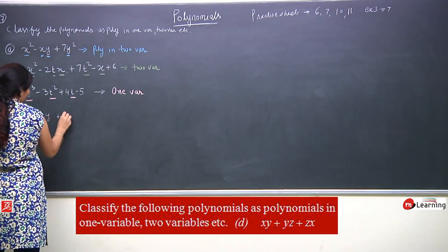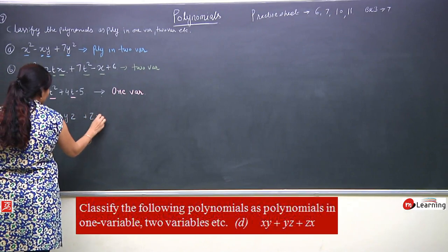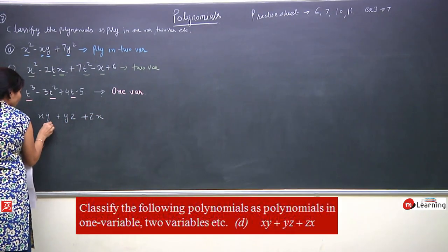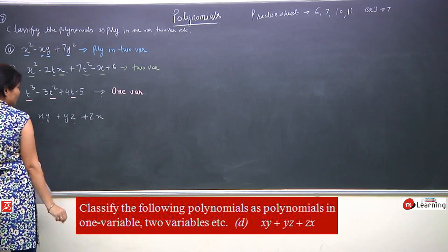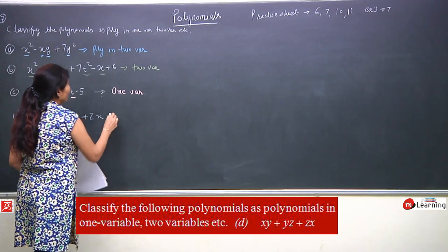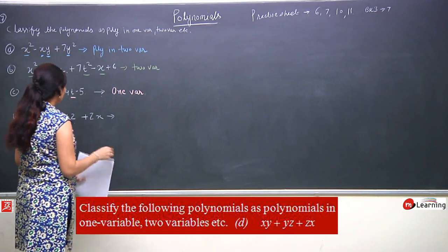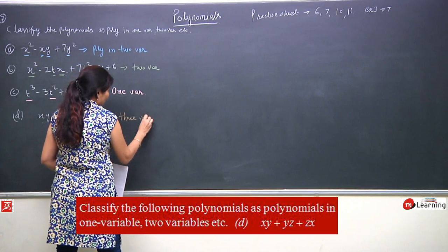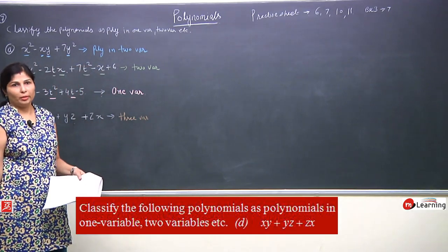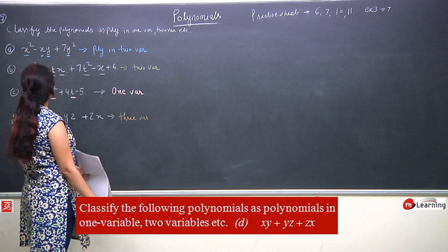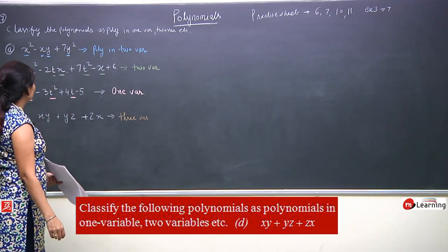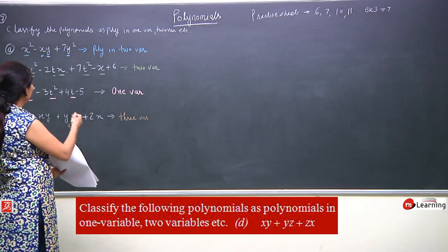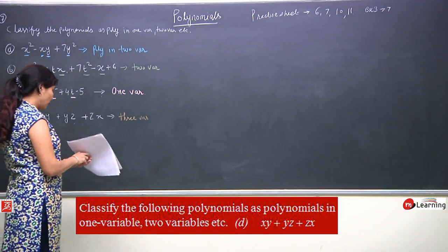The fourth polynomial is xy plus yz plus zx. Here we see three variables: x, y, and z. So this is a polynomial with three variables. We have now classified all the given polynomials as 1-variable, 2-variable, or 3-variable.